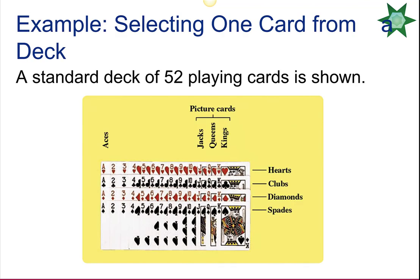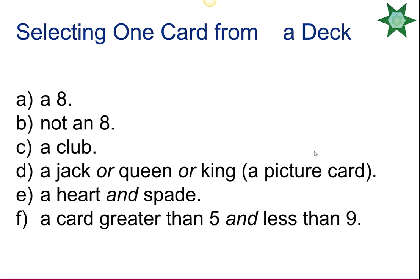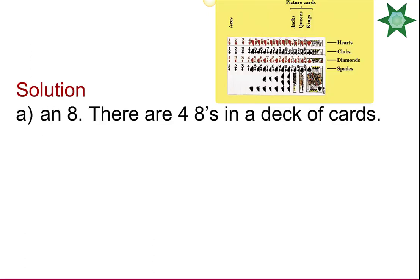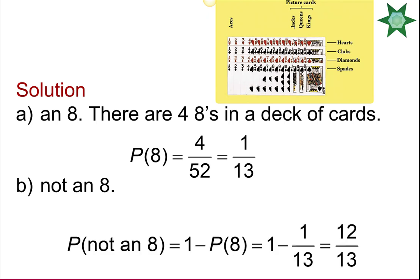Working with a standard poker deck of 52 cards, 4 suits, 13 cards per suit: hearts and diamonds are red cards, clubs and spades are black cards, and kings, queens, and jacks are picture or face cards. Drawing one card: the probability of getting an 8 is 4 out of 52, or 1 out of 13. The probability of not getting an 8 (using the complement rule) is 1 minus 1/13, which simplifies to 12 out of 13.